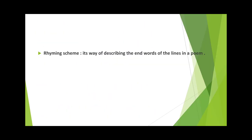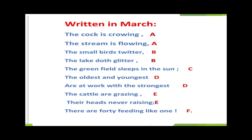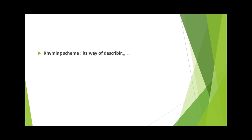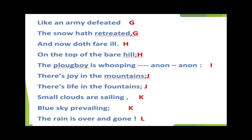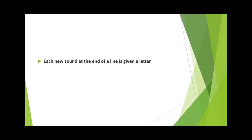Rhyming scheme is a way of describing the end words of the lines in a poem. Here you can see how we have described the last ending words of the lines in a poem with the help of the English letters, and that is the rhyming scheme. Each new sound at the end of a line is given a new letter. For example, defeated and retreated are similar, so we labeled them with the same letter G, G. But ill and hill are a new sound, so we label them with another letter.